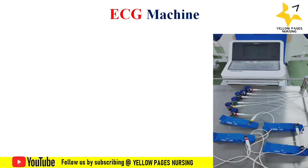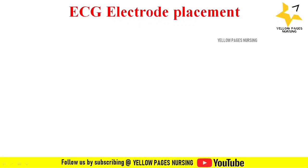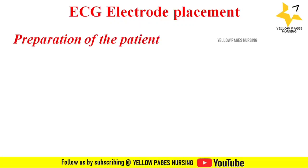The ECG machine comprises 10 wires consisting of four limb or peripheral leads — RA and LA for right arm and left arm, RL and LL for right leg and left leg — and six chest or precordial leads numbered V1 to V6. The standard 12-lead ECG is obtained using these 10 electrodes.